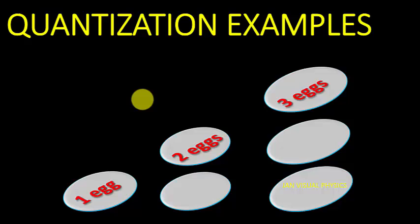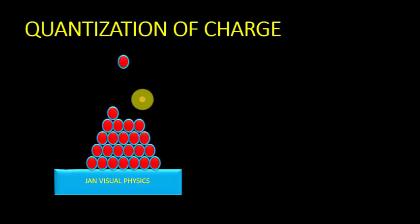Similarly, charge on a body is also a quantized quantity. Whenever we charge a body, the total charge on a body is found to be an integral multiple of electronic charge.